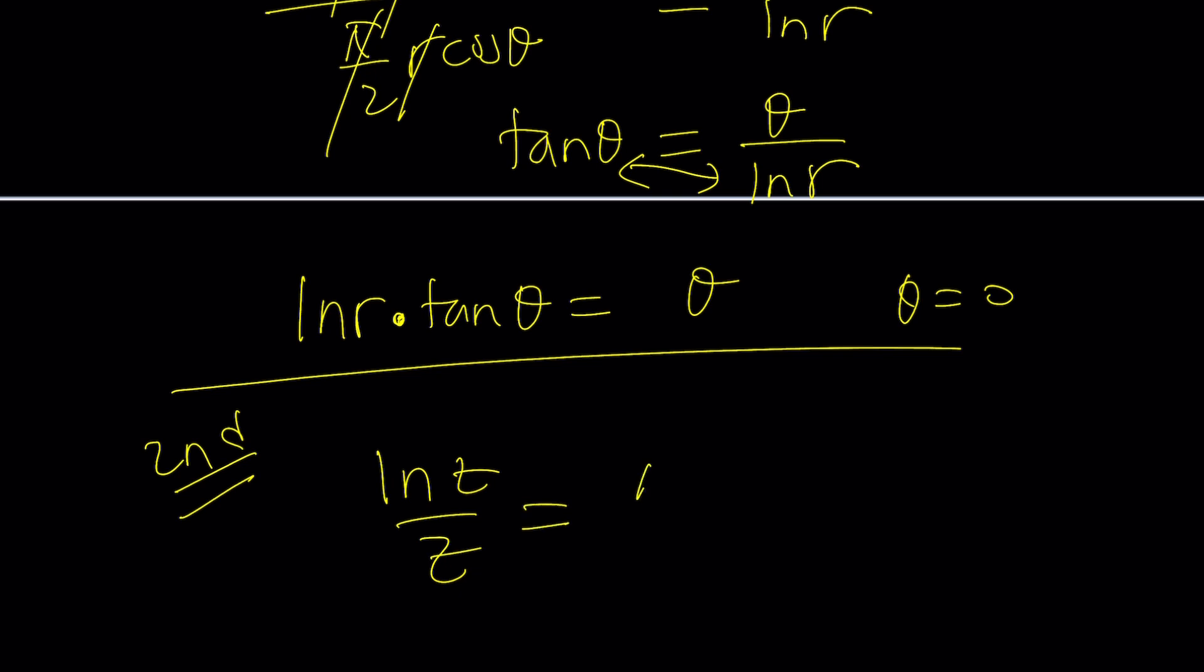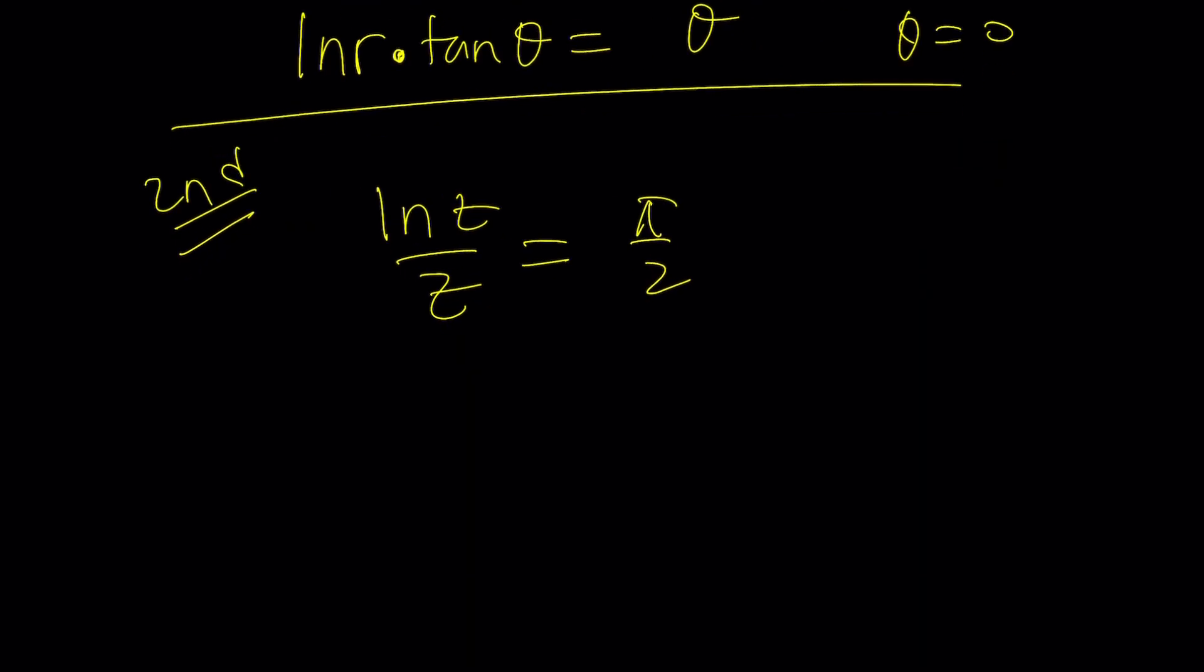I have ln Z over Z equals π over 2, and then now I'd like to turn this into something that I can manipulate. And that can be done by doing the following. I can write this as 1 over Z times ln Z equals π over 2. I want to call 1 over Z something. How about w? Then this Z would be 1 over w, so it's going to be like w times ln 1 over w equals π over 2.